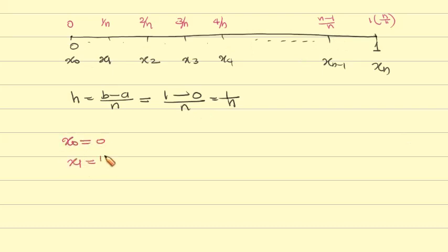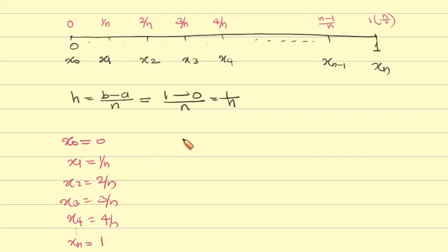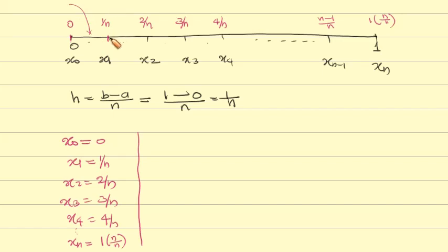We set up the partition points: x₀ = 0, x₁ = 1/n, x₂ = 2/n, x₃ = 3/n, x₄ = 4/n, and so on, with xₙ = n/n = 1.